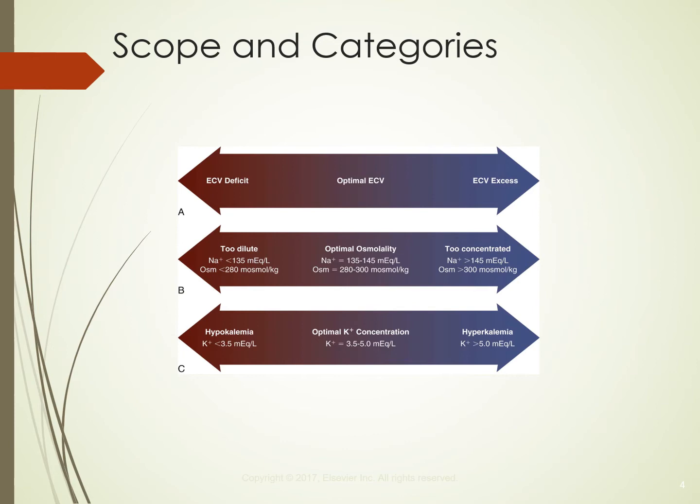Scope and categories: optimal extracellular volume is in the middle, excess is to the right, and deficit is to the left. Arrow B represents optimal osmolality in terms of electrolytes — sodium is normally 135 to 145 milliequivalents. Too concentrated means sodium greater than 145 and osmolality greater than 300. Too dilute means sodium less than 135 and osmolality less than 280.